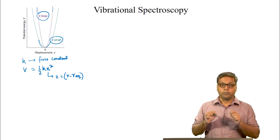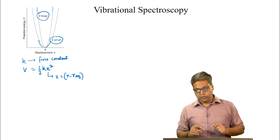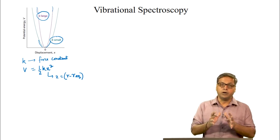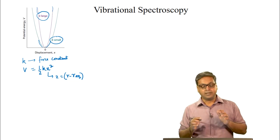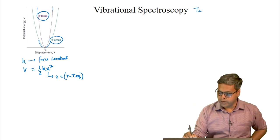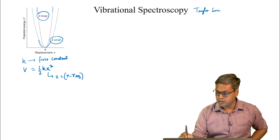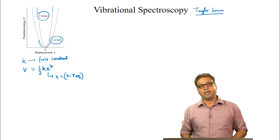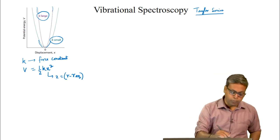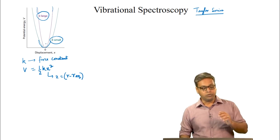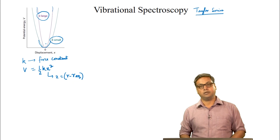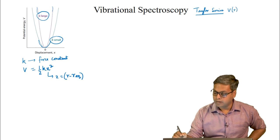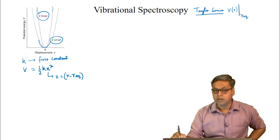In order to understand the connection between the shape of the molecular potential and the value of k, we can expand the potential energy, which is a function of r. We can expand V(r) around the minimum by using something called a Taylor series. The minimum of the potential energy is found at the equilibrium bond length, so we will be expanding V(r) around r-equilibrium.